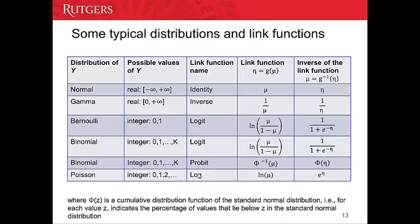This table shows some distributions of the dependent variable and their corresponding link functions. The first columns show the possible values the dependent variable can take and the corresponding distribution. For example, if the dependent variable can take all real values, it follows a normal distribution, and we use the identity link function — meaning the linear predictor equals the mean of the dependent variable, and the inverse of the link function equals eta.